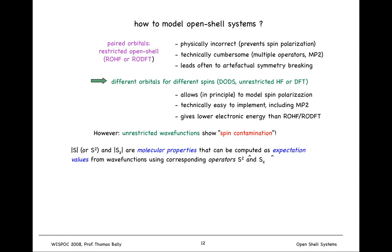It turns out that unrestricted wave functions can show something called spin contamination. Remember that spin is a molecular property, and you can compute expectation values from spin operators that have good quantum numbers that tell you something about the number of unpaired electrons. So there's the total spin operator S squared and there's the spin along the Z component operator S_Z.